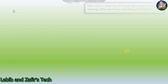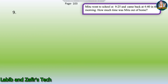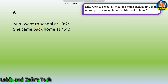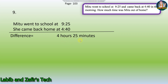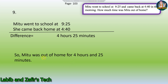Now let's go to our ninth and last word problem of today's video. Mitu went to school at 9:25 and came back at 4:40. How much time was Mitu out of home? Mitu went to school at 9:25 and came back home at 4:40. We have to subtract. 4:40 minus 9:25 gives 4 hours 25 minutes. Mitu was out of home for 4 hours and 25 minutes.